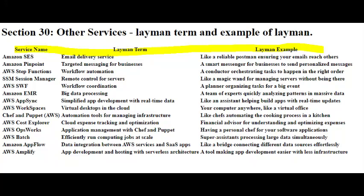Imagine you're building a chat application. With AWS AppSync, you don't need to worry too much about how messages get from one user to another. You just tell AppSync what data you want to send, and it figures out the best way to get it there. For instance, when you send a message, AppSync could make sure that everyone in the chat room gets the message at the same time, no matter if they're using a computer, a tablet, or a phone. It's like having a magical messenger that ensures everyone stays up to date, without you having to handle all the nitty-gritty details of sending and receiving messages across different devices. In short, AWS AppSync simplifies the way your apps share information, making it easier for you to focus on building cool features rather than dealing with the complexities of data synchronization.